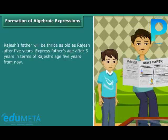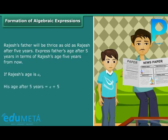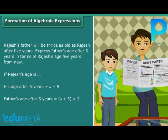Rajesh's father will be thrice as old as Rajesh after 5 years. Express the father's age after 5 years in terms of Rajesh's age 5 years from now. If Rajesh's age is a, his age after 5 years is a plus 5. Father's age after 5 years is equal to (a plus 5) into 3.